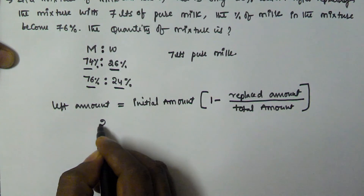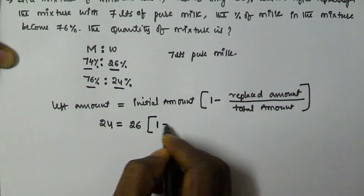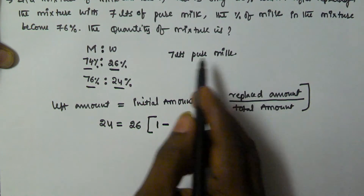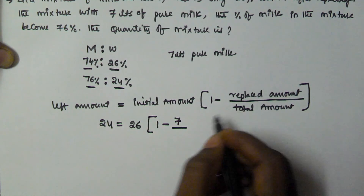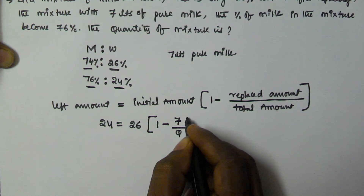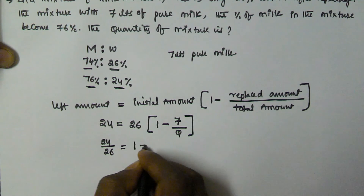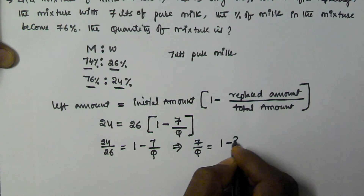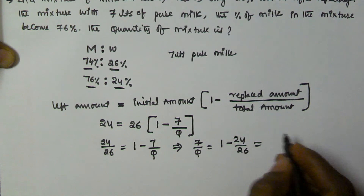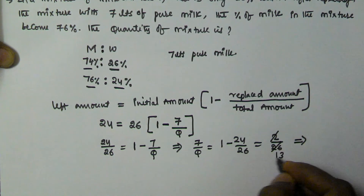So: left amount of water = 24%, initial water = 26%. Setting up: 24/26 = 1 minus 7/q, where q is the total quantity. So 7/q = 1 minus 24/26 = 2/26 = 1/13.